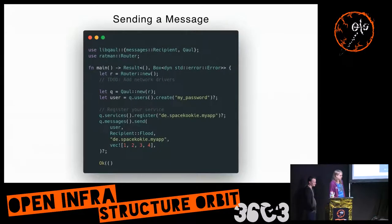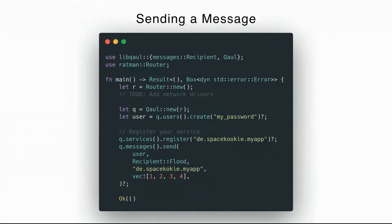The way this looks in actual code — this is the initialization of an application running on QualNet. The thing that's missing, marked as a to-do, is that this is not initializing any network modules. So you're creating a router and not attaching anything to it, so the router will get every packet and essentially save it. You initialize everything from the bottom up: your network stack, then the router, then libqaul — which is the qaul struct created there. You can create users with this API, register a service — in my case de.space.cookie.my_app — and then you can send a message.